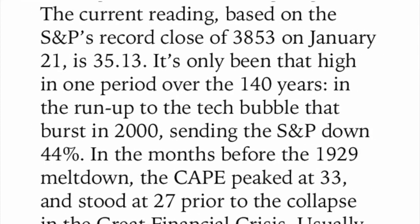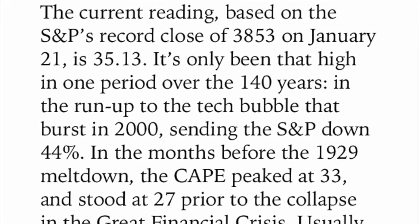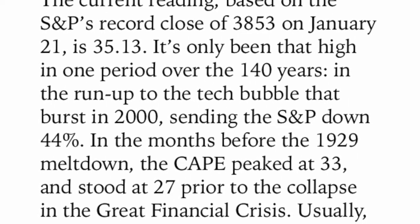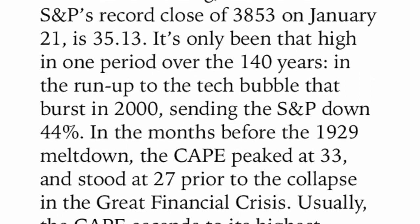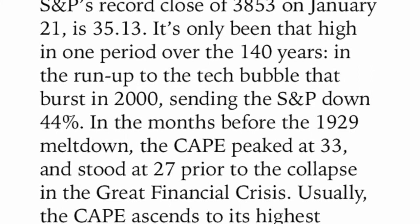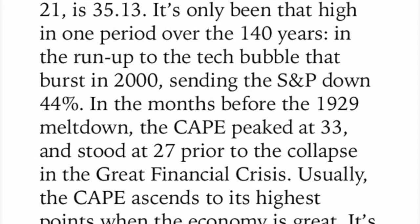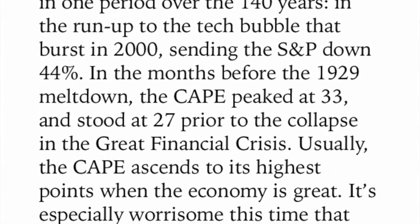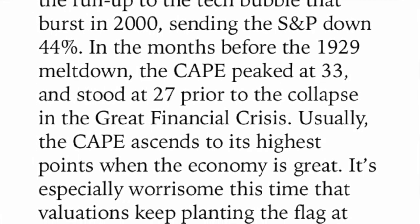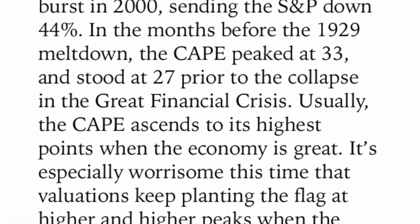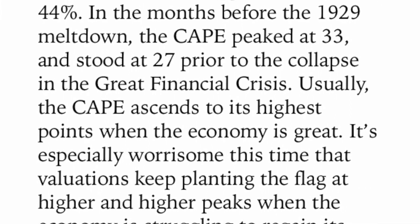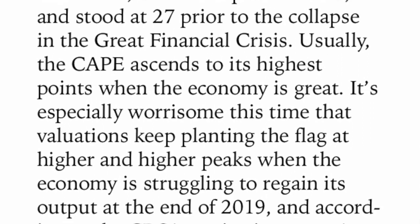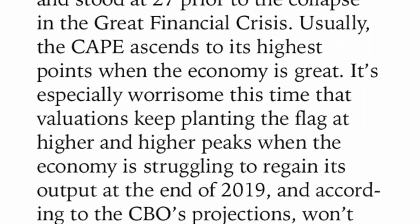The current reading, based on the S&P's record close of 3,853 on January 21st, is 35.13 — a lot higher than my example. It's only been that high one period over the 140 years: the run-up to the tech bubble that burst in 2000, sending the S&P 500 down 44%. In the months before the 1929 meltdown, the CAPE peaked at 33 and stood at 27 prior to the collapse in the great financial crisis.